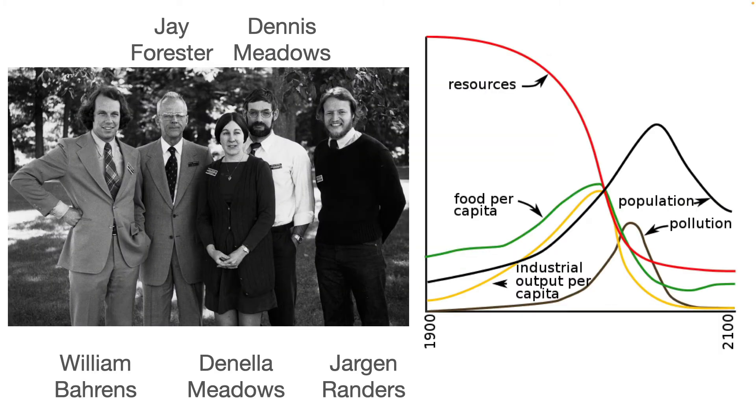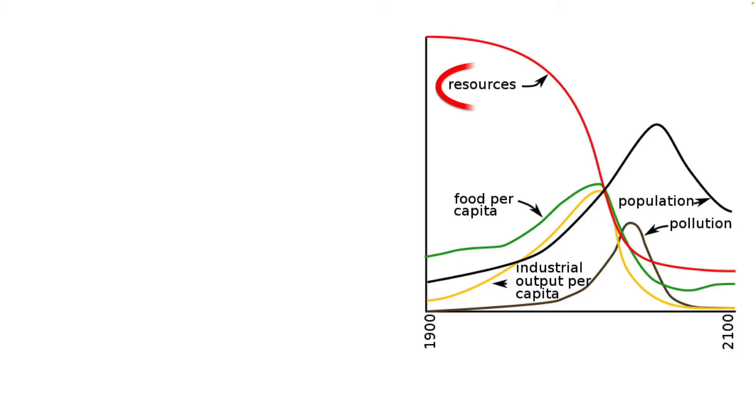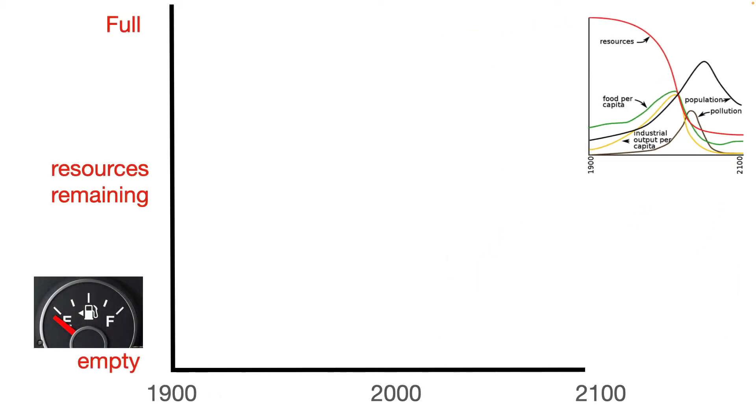In 1972, a group at MIT discovered such a running out of gas event. In their data, this red line can be thought of as civilization's gas gauge. It shows the amount of resources remaining in the Earth's crust. Full in 1900, 85% full in 1972, and empty at the bottom of the graph.